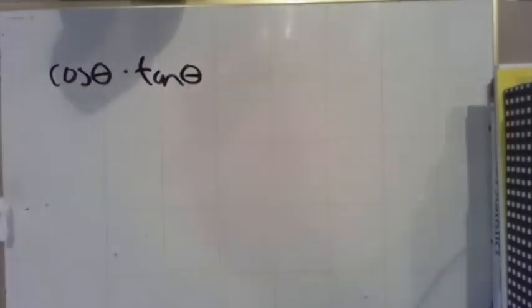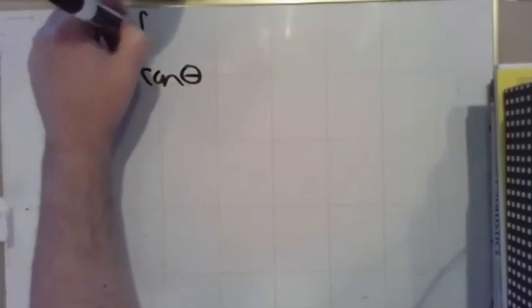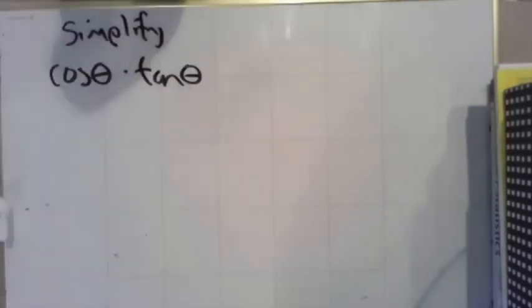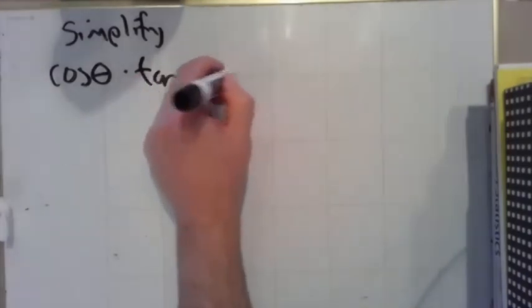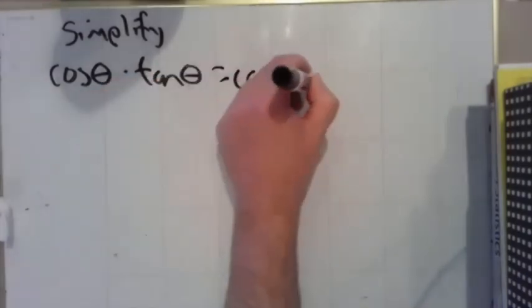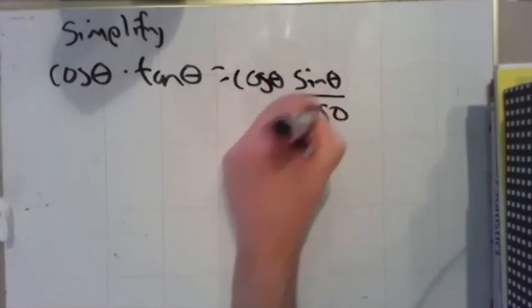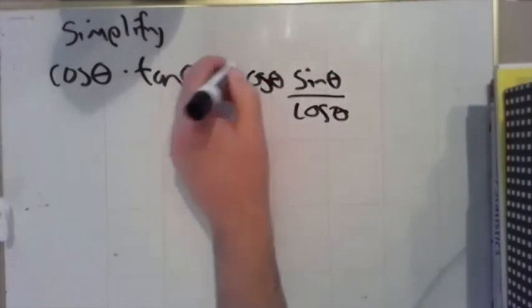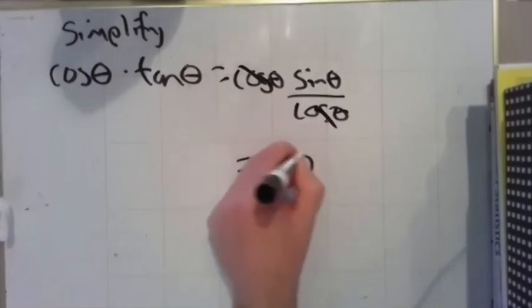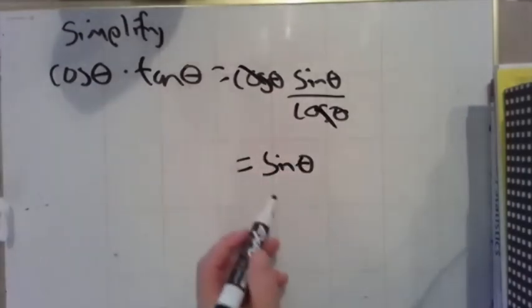So, for example, let's say I had, I don't know, cosine of theta times tangent of theta, and somebody just told me to simplify this. Well, I could think, well, tangent is just sine over cosine. Oh, look, I could cancel the cosines and just get sine. So cosine times tangent just reduces to sine of theta.